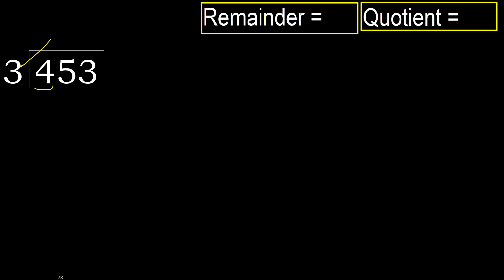6 is greater. 3 multiplied by 1 is 3. 3 is not greater, ok. Subtract. 4 minus 3 is 1. Next.